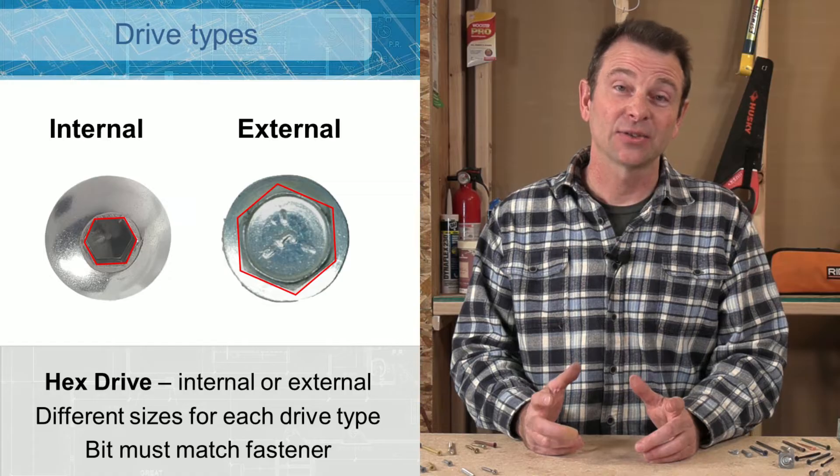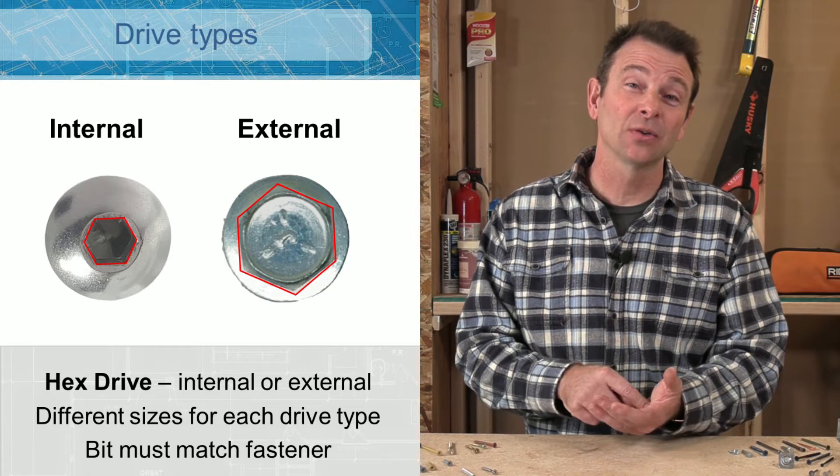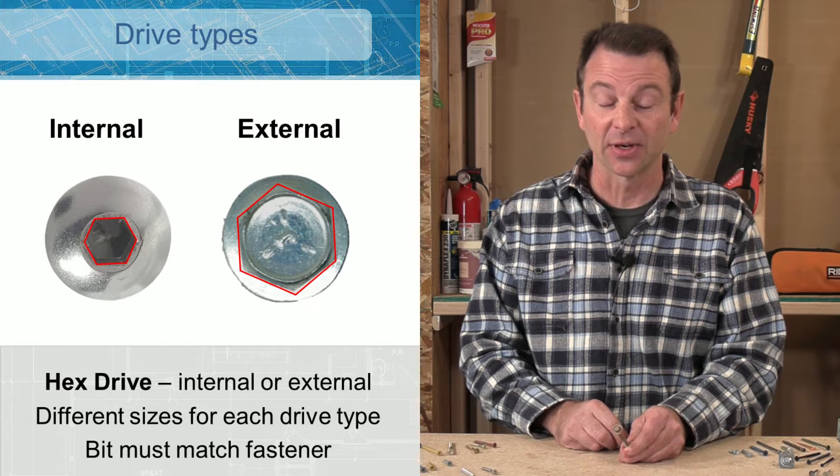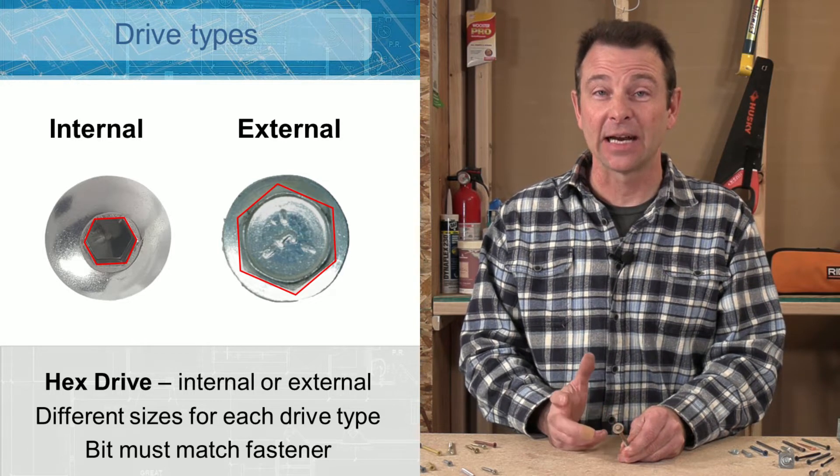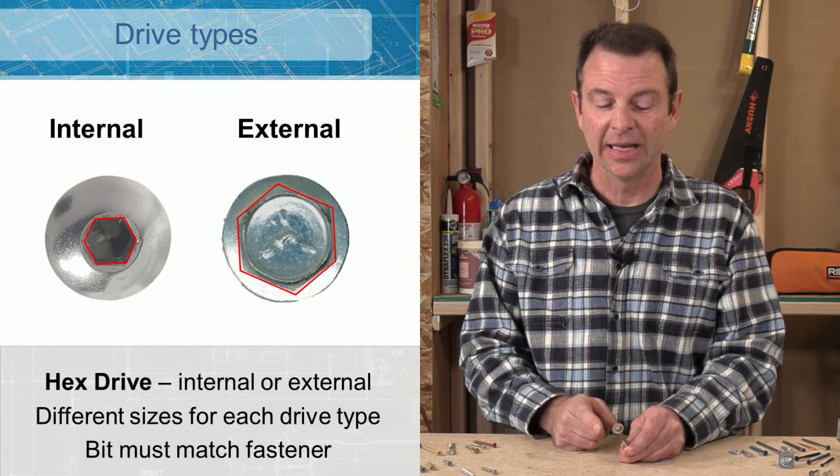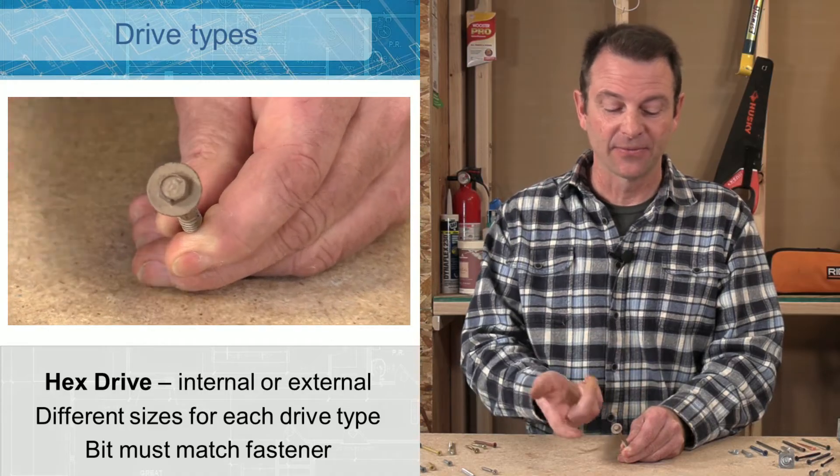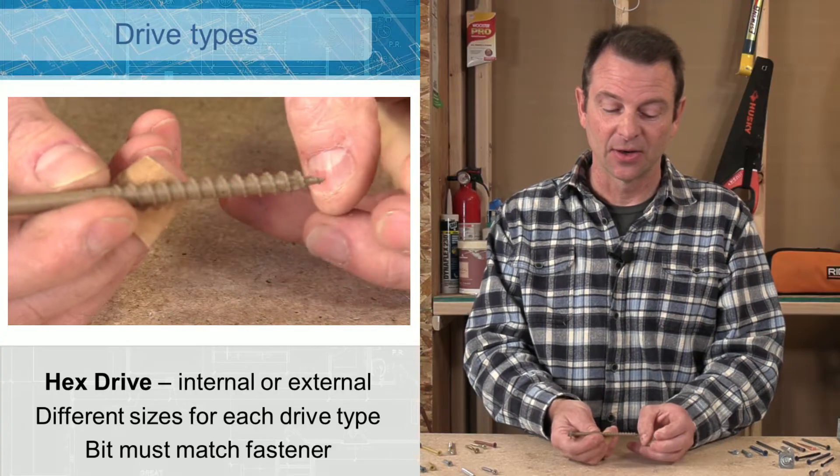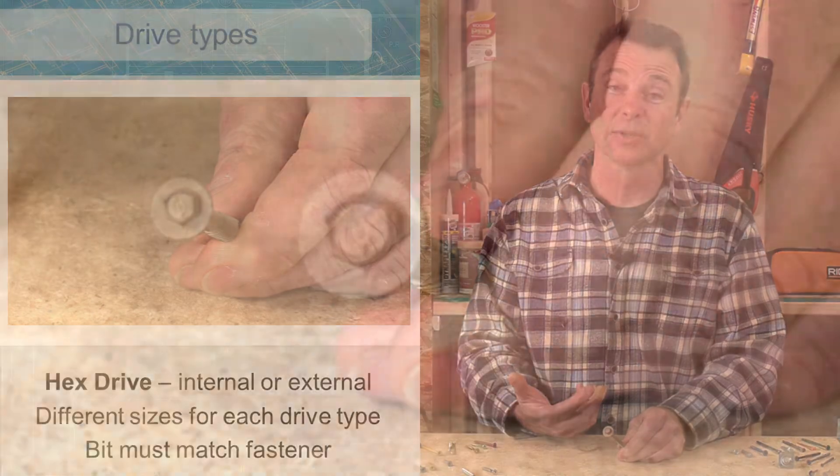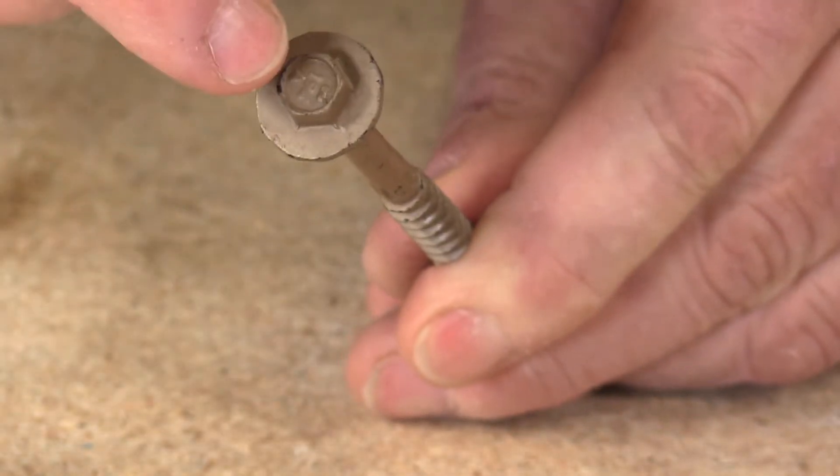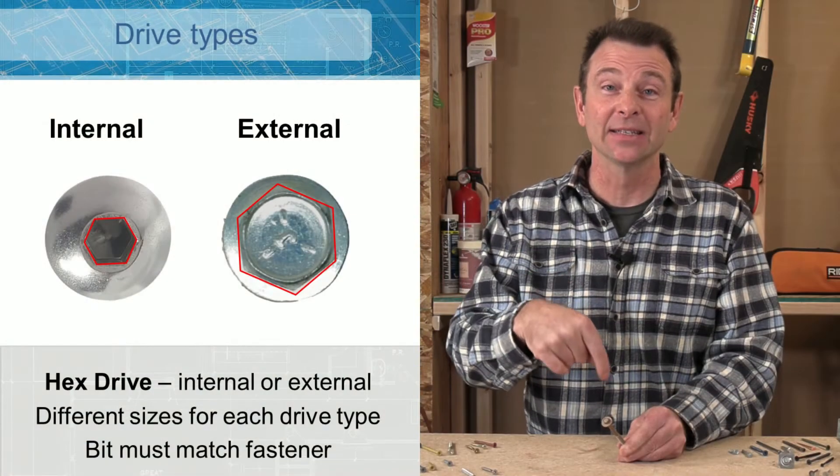You might see a hex drive and you might see an internal or an external hex drive. Here you'll see the external hex drive. This takes a socket type driver bit and it offers a lot of strength. So this type of screw, as you can see, this large screw would require a lot of force and power to put into the material. An internal one would have this hex shape stamped into the head.